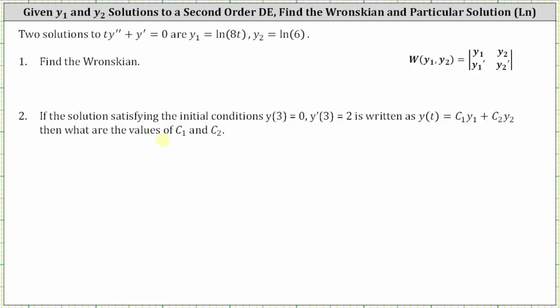Let's begin by determining the Wronskian, which because we have two solutions is equal to the two by two determinant shown here on the right, where we have the original functions in row one and the first derivatives in row two. So the Wronskian is equal to the two by two determinant where the first row is natural log of eight t and natural log six.